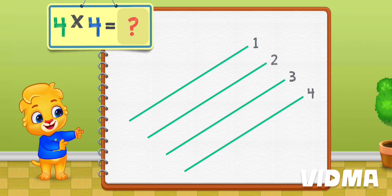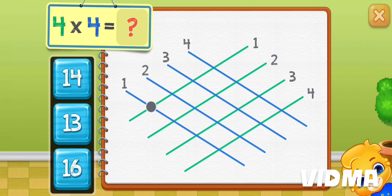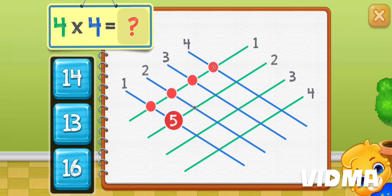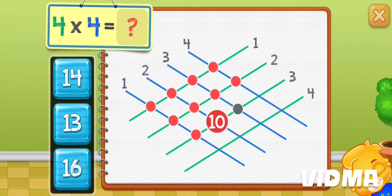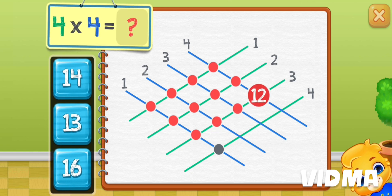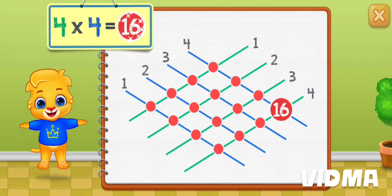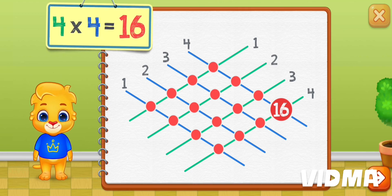Four times four equals — one, two, three, four, five, six, seven, eight, nine, ten, eleven, twelve, thirteen, fourteen, fifteen, sixteen. Four times four equals sixteen.